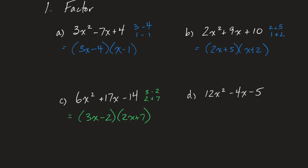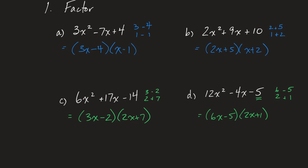Take a look at D. Since the constant at the end is a prime number, I know my only options are 5 and 1. So it then becomes all my options for 12. Maybe I go to the middle first and try 4 and 3 — there's a 15 and a 4, can't get a 4 out of that. If I flip it that's a 20 and a 3 — even farther away. So it was not 4 and 3. If I try 6 and 2, play with my 5 and my 1, there's a 6 and a 10 — I can get a negative 4 if my 10 is negative and my 6 is positive. Put in your brackets and your variable and we are factored. That gives you a decent review of simple and complex trinomials.